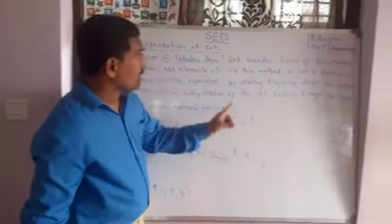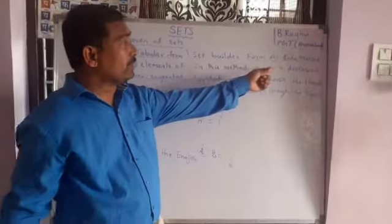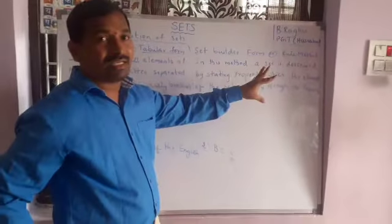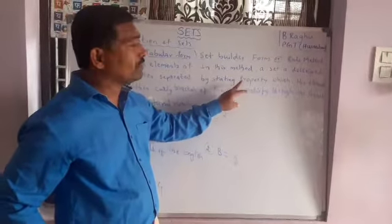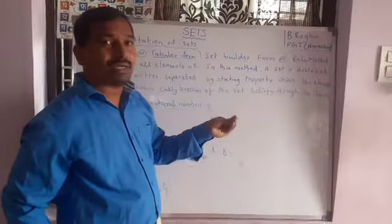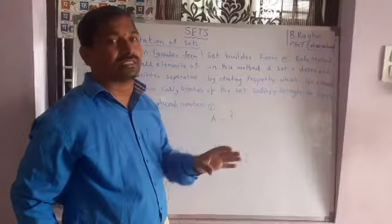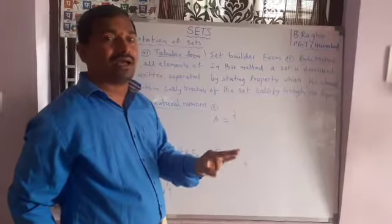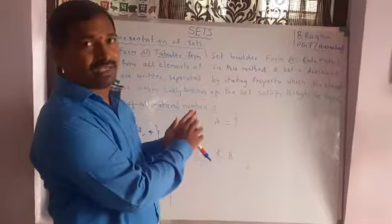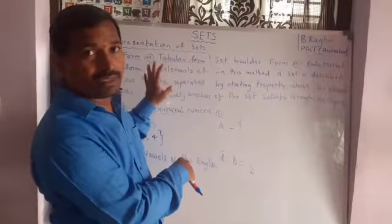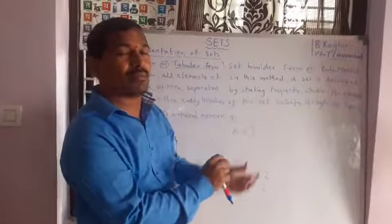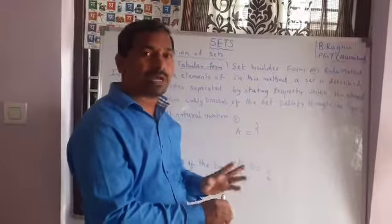Let us discuss set builder form or rule method. In this method, the set is described by stating a property. With one common property, we describe that set. We are not listing all the elements. The difference between the two forms is: in roster form we list the elements, while in set builder form we describe the elements by a common property.